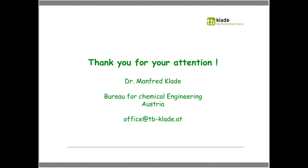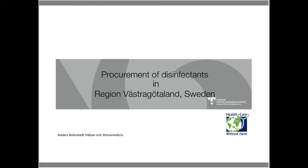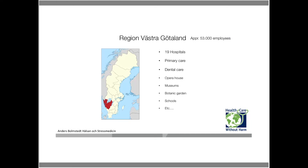Thank you, Manfred. Now I'd like to give the floor to Anders, who will explain his experience in the procurement of disinfectants within the region. I want to give you a brief introduction on how we do our procurement process for disinfectants in Region Västergötland, Sweden. The region is shown here on the map in red. We have 19 hospitals, primary care, dental care, and also an Opera House, which actually uses a lot of disinfectants. We have 53,000 employees and we make procurement for the whole region.